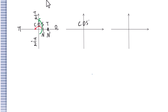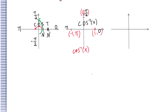Let's go to inverse cosine of x. Label 0, pi over 2, pi. The coordinates are: (1, 0), (0, pi over 2), (negative 1, pi). For inverse cosine of x, the domain is between negative 1 and 1, and the range is between 0 and pi. For reference angle theta, the second quadrant angle will be pi minus theta.